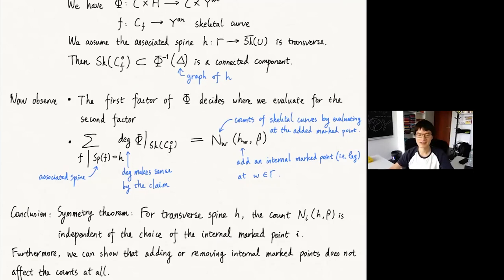Maybe there is time for questions. I have a very simple question: you have this variety H, which has the same dimension as Y and also has a logarithmic volume form. Does this mean you can reproduce from one log-Calabi-Yau another log-Calabi-Yau? Yes. And does this H contain the torus again?